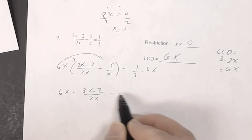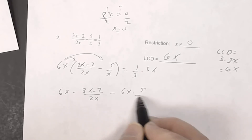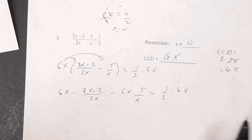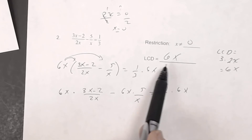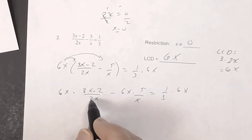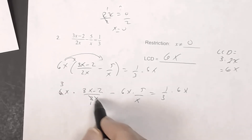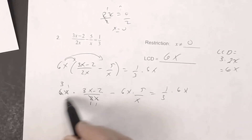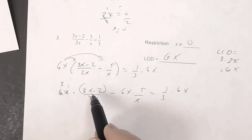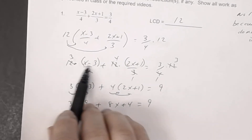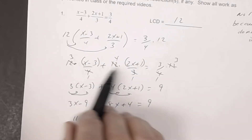Distributing 6x gives: 6x times (3x minus 2) divided by 2x, minus 6x times 5 divided by x, equals (1/3) times 6x. The 2x divides into 6x to give 3, and the x divides into 6x to give 6. Remember to put each multi-term numerator in parentheses.